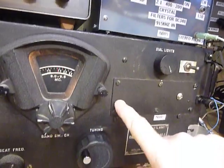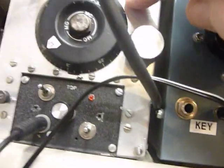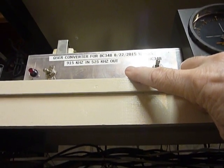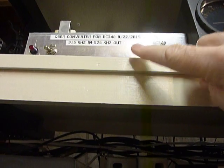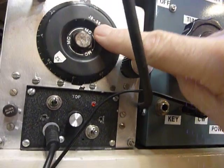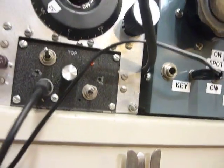That also requires a converter. That converter is up here. It's a one tube converter that converts the 915 kilohertz IF to 550 kilohertz for the BC 453.